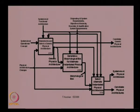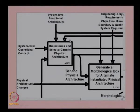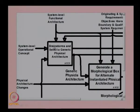This process is explained using an IDEF0 diagram. The first level involves brainstorming to select a generic physical architecture. This requires discussion because converting a functional architecture to a generic physical architecture is tricky and requires understanding the functions and finding generic elements. The inputs are the system-level functional architecture and the system-level operational concept, which together inform the brainstorming session to produce the generic physical architecture.